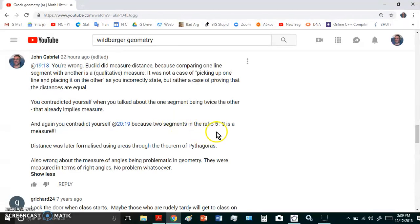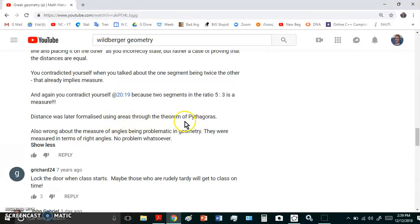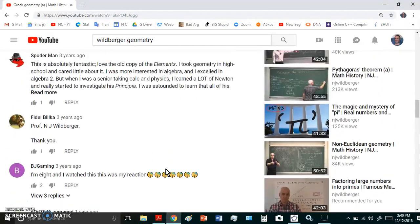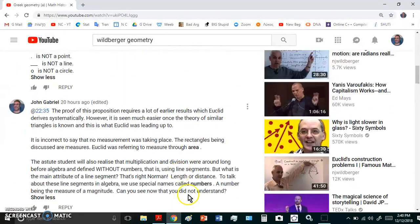And then he contradicts himself later on when he talks about one segment being twice the other. Well if it's twice the other, that already implies measure has taken place. So again, he contradicts himself later by saying two segments are in the ratio of 5:3. Well if you can say that, a lot of measure has taken place there. You've measured both segments and you've compared them so that they are in a particular ratio. Distance was later formalized using areas through the theorem of Pythagoras. And of course, Wildberger is also wrong about the measure of angles being problematic. There were no problems because the ancient Greeks measured angles in terms of right angles. And there was nothing that was problematic or ill-formed about it. And of course, Wildberger likes to say these things because he's come up with something called rational trigonometry, which quite frankly is a load of junk in my opinion. And it doesn't provide any benefits or any advantage over Greek trigonometry, which has lasted all these hundreds of years.